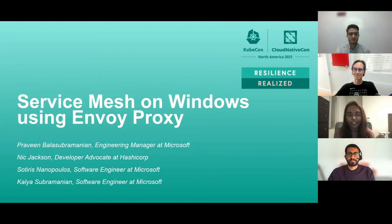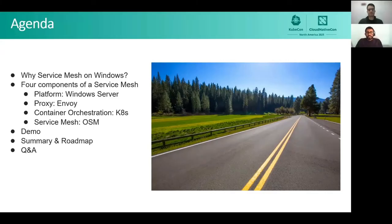Now let's get into our agenda. We will start out by recapping what is a service mesh and make a case for Windows platform support. We will then describe the four major components required for a service mesh deployment, including the platform, the proxy, the container orchestration system, and the service mesh control plane. We will then demo a service mesh powering both Windows and Linux containers, and conclude with a summary and our future roadmap.